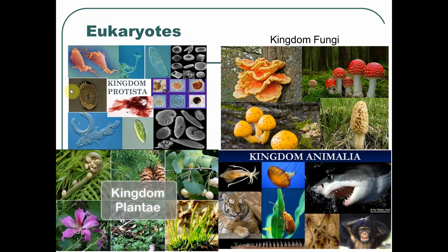Protists are microscopic organisms — only one cell — but they're complex with a nucleus, so they fall under eukaryotic life. They're the exception where eukaryotes are unicellular. Fungi, plantae, and animalia are multicellular organisms. All life on this planet can be classified into one of those six kingdoms. The eukaryotic kingdoms — fungi, plantae, and animalia — are complex multicellular organisms with a nucleus, while protists are unicellular eukaryotes.